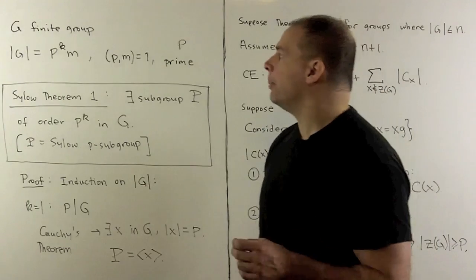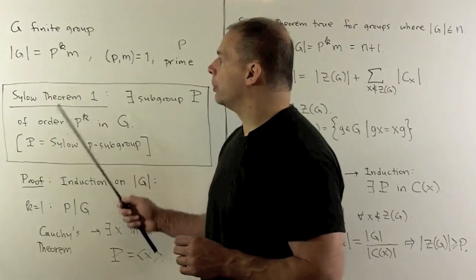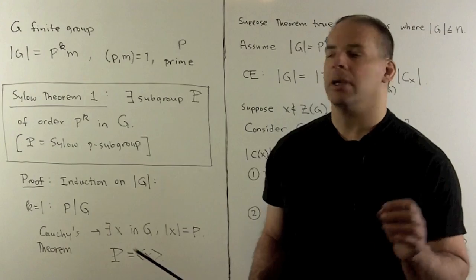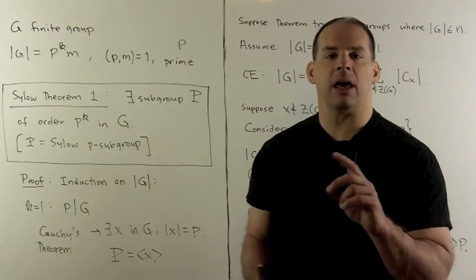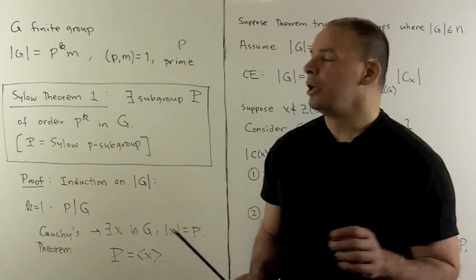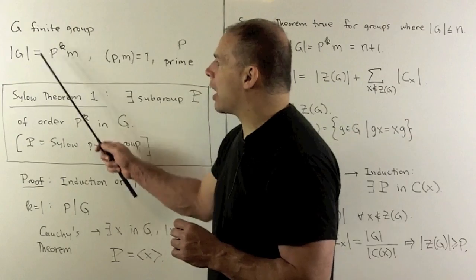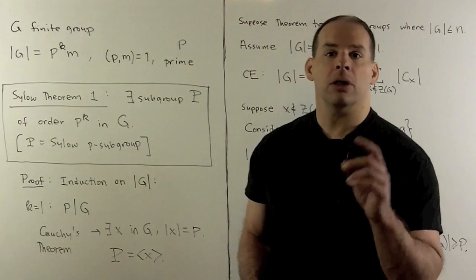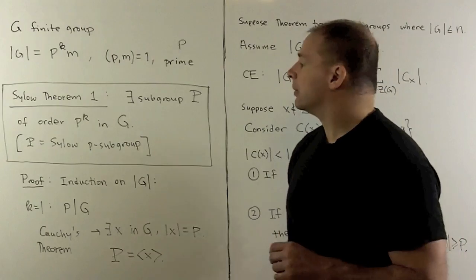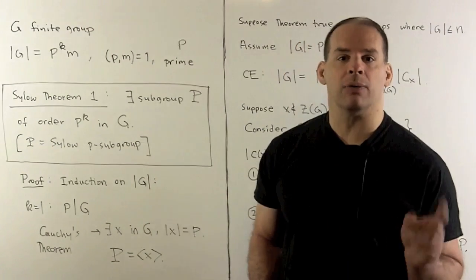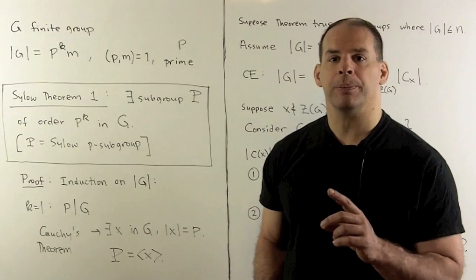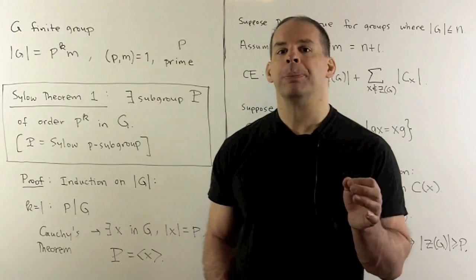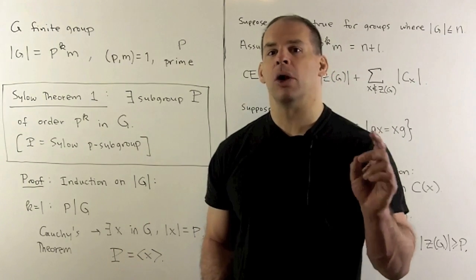Our scenario: we have G as a finite group. The order of G is given as p^k times m, where p is a prime and p and m are relatively prime. So here we're just splitting off the largest power of p in the order of the group. The first Sylow theorem states there exists a subgroup of order p^k in G. If we have any subgroup with that same order, we call it a Sylow p-subgroup.